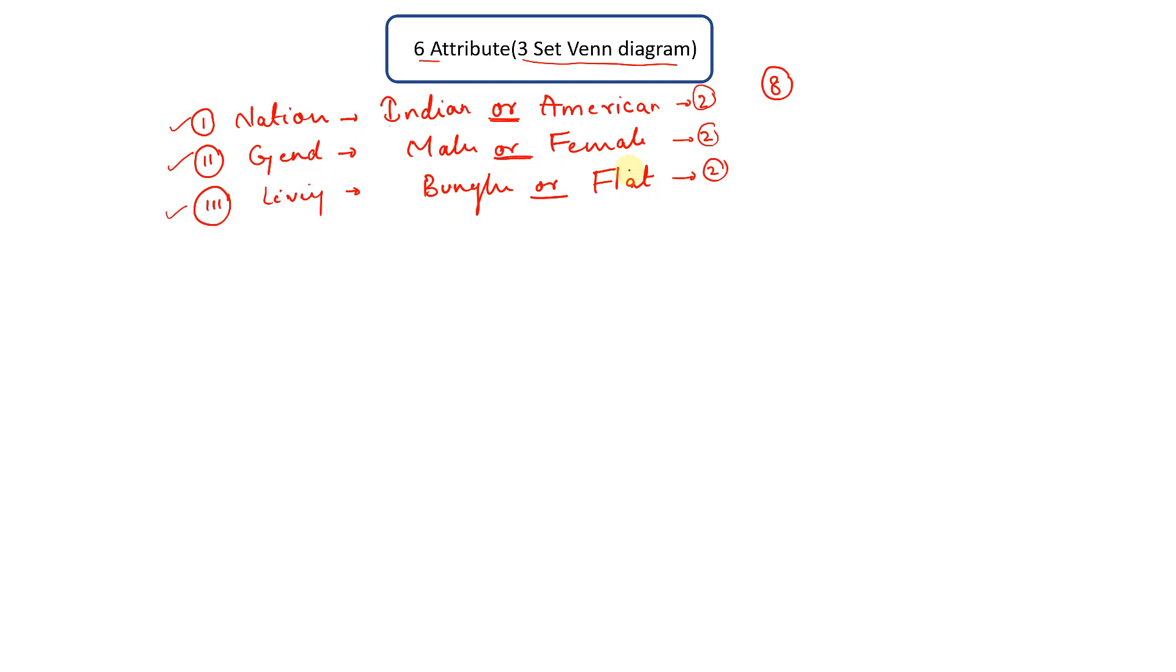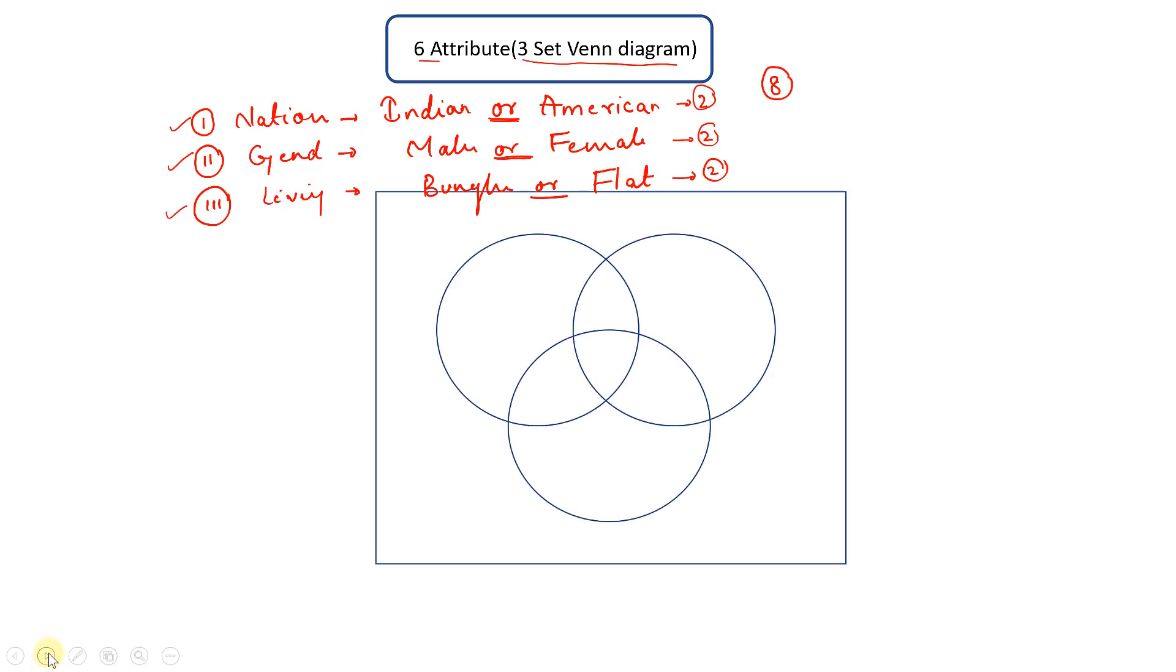So we try to solve such questions using three set Venn diagram. So I'll tell you how. Let's suppose this is a three set Venn diagram. Now three sets for each circle. Now each circle can be named as any one of them. Let's suppose I'm naming this circle for nationality. I can name this as an Indian or American, either of them. So let's suppose I'm writing it as Indian.